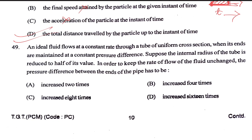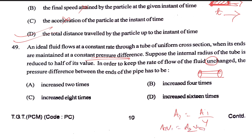An ideal fluid flows at a constant rate through a tube of uniform cross-section when its ends are maintained at a constant pressure difference. Suppose the internal radius of the tube is reduced to half — the area of cross-section becomes 1/4 times. To keep the rate of flow of the fluid unchanged, the pressure difference must be increased — approximately 16 times by Poiseuille's law.